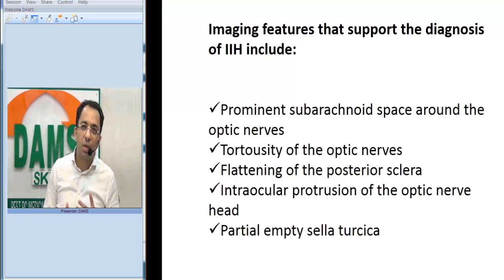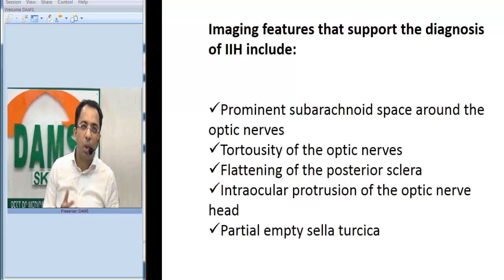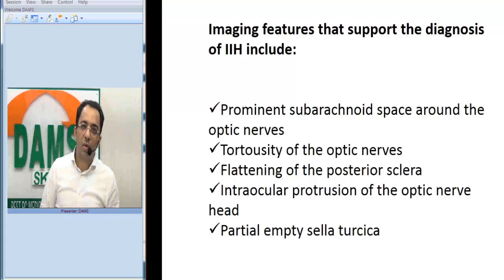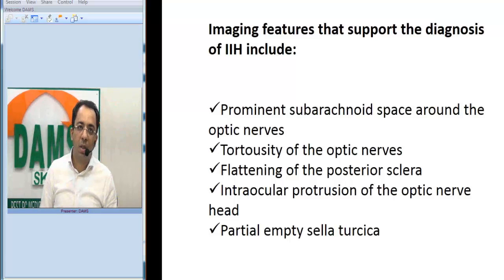The take-home message: whenever you see a patient in whom causes of raised ICP have been ruled out — typically a female presenting with headache — and you find prominent subarachnoid space around the optic nerve, tortuosity of the optic nerves, flattening of the posterior sclera, intraocular protrusion of the optic nerve head, and a partially empty sella turcica, these features suggest the diagnosis of idiopathic intracranial hypertension, also called pseudotumor cerebri.